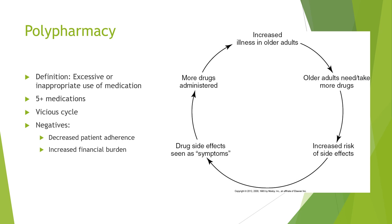The negatives here include patients not adhering to their prescription schedule and increased financial burden. The Medicare donut hole refers to the fact that once a patient hits a certain dollar threshold for the year, Medicare will no longer cover those medications. The patient then has to pay 100% of the cost until they get back out of the donut hole, which can last one to three months and cost thousands of dollars. For patients on a fixed income, this may cause them to choose not to take certain medications.